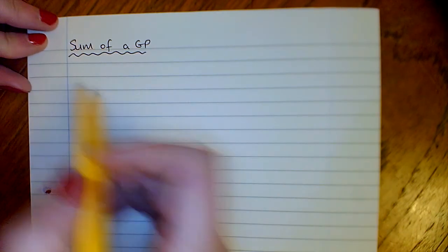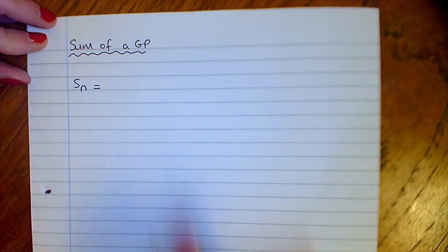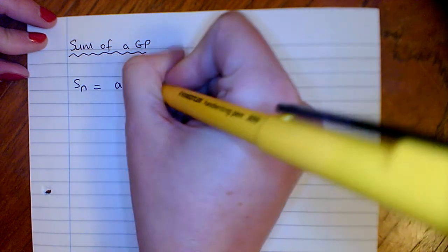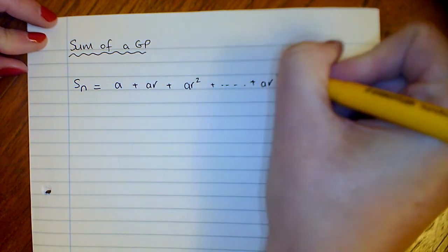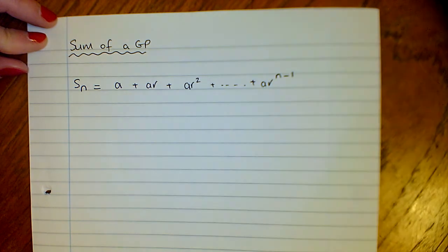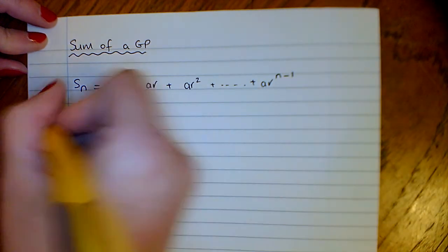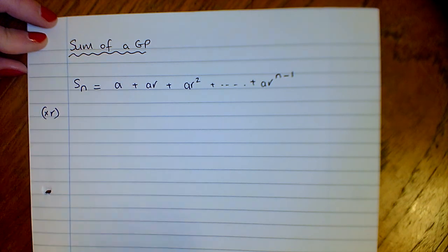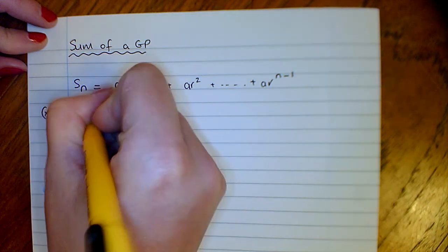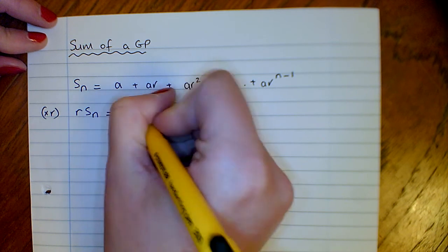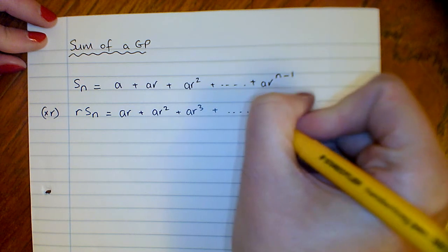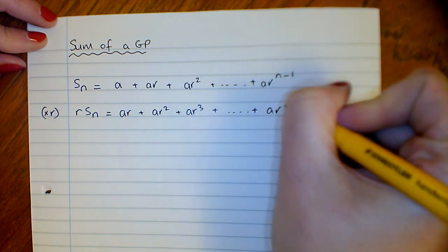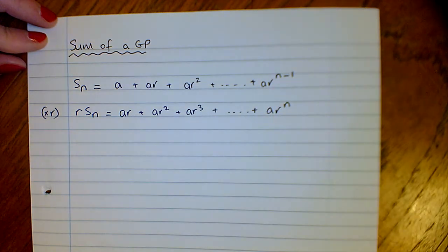Same as we had with an AP, we'll have to be able to prove the sum of a GP. If we consider the sum, we've got A plus AR plus AR squared, etc., up to AR to the power of n minus 1. We're going to then multiply everything by R. So we'll get RSN equals AR plus AR squared plus AR cubed, etc., right up to AR to the power of n.